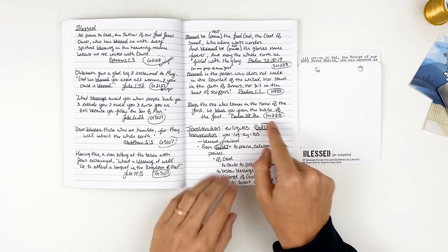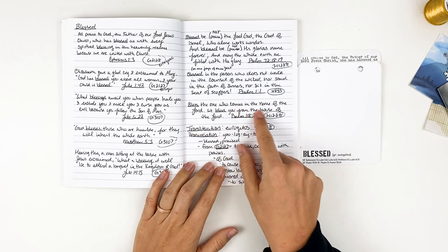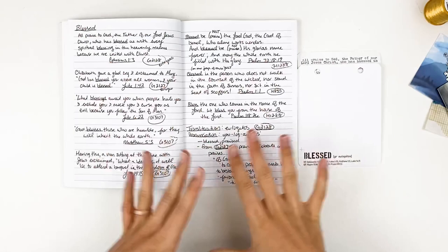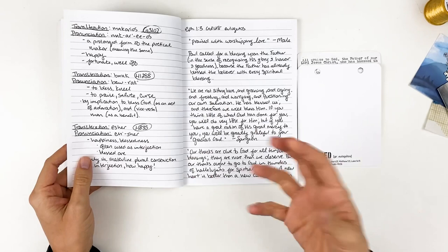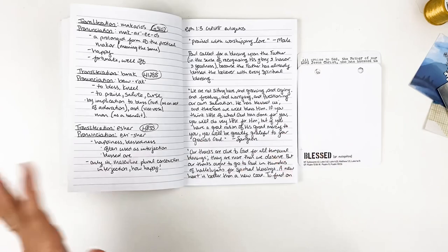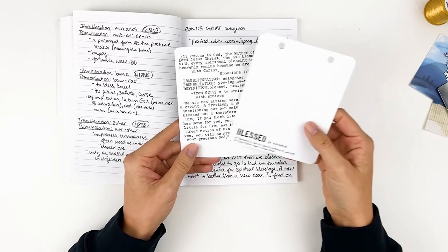Psalm 118:26 goes back to H1288, which is that barak, to praise, salute, curse, an act of adoration. And so it's going to say, bless the one who comes in the name of the Lord. We bless you from the house of the Lord. So that is kind of the fun part of doing these word studies is seeing all these different words and the meanings and looking at the different ways that they're used and the root words. And you start to, as you do these more and more, it becomes a little easier because you kind of start to understand that and grasp those ideas.